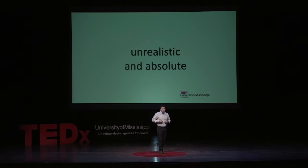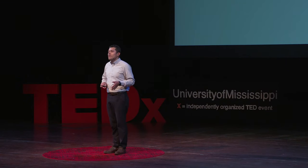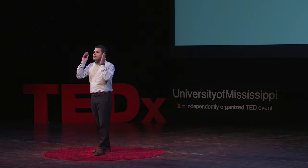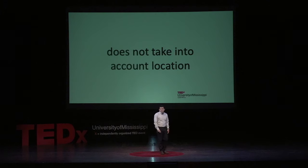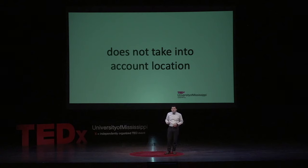Several researchers, journalists, and politicians have criticized this measure because not only was the food plan not realistic for minimum everyday life, but also because the measure is absolute. A family that earns even one penny more than the threshold would not be considered in poverty. Another shortcoming is that the cost of living can be more or less expensive depending on where you live, and this method does not take that into account.